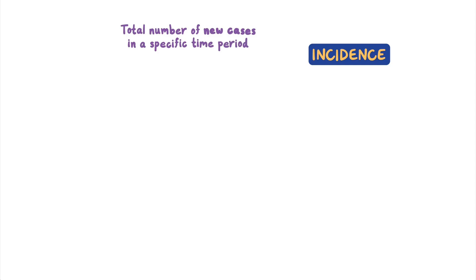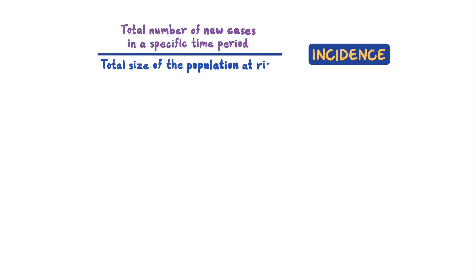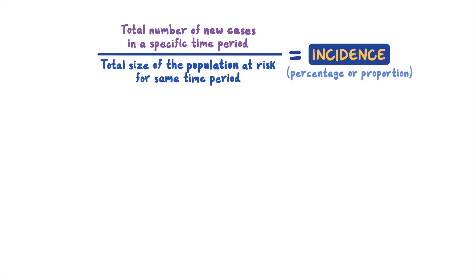The numerator is the total number of new cases in a specific time period, usually a week, month, or year. The denominator is the total size of the population at risk for that same time period. Incidence of an infectious disease can be expressed as a percentage or a proportion per unit of population.